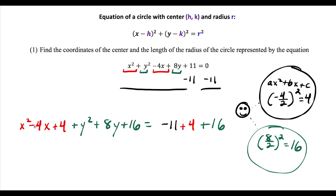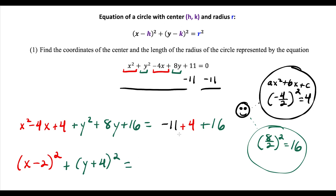Now we factor. On the left, x squared minus 4x plus 4 factors as x minus 2 times x minus 2, which is x minus 2 squared. Then y squared plus 8y plus 16 factors as y plus 4 squared. On the right side, we add the numbers: 4 plus 16 minus 11 gives us 9, which we can also think of as 3 squared.